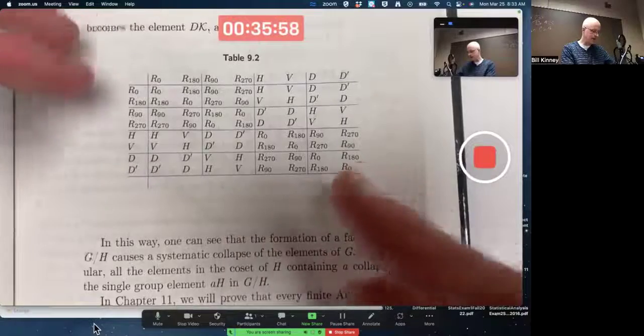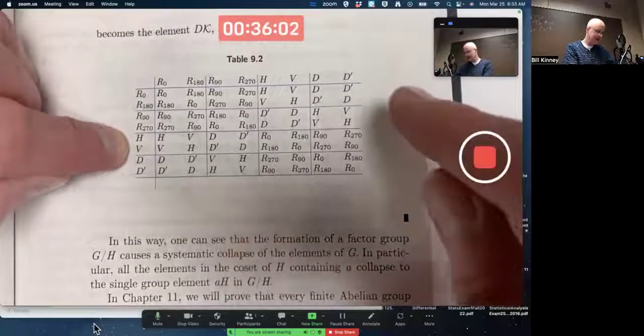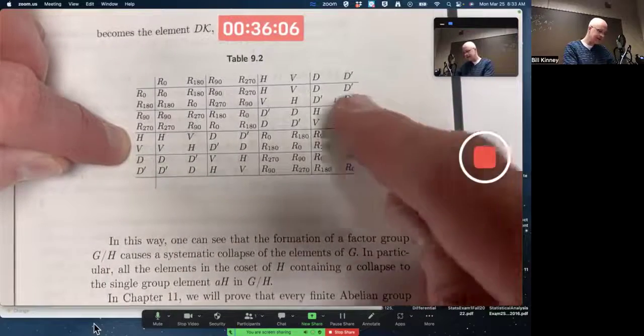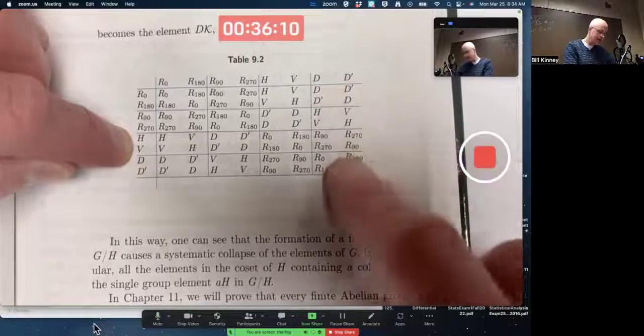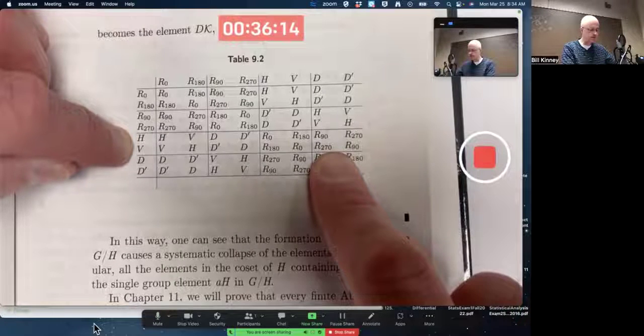And you can see visually how, for example, this coset HK, H times K or V times K times this coset DK or D prime times K gives you this coset, R90 times K or R270 times K.